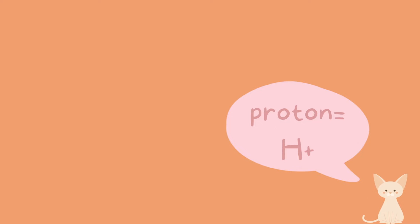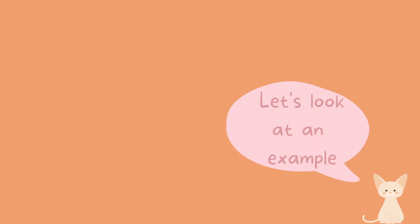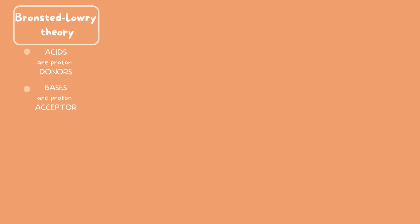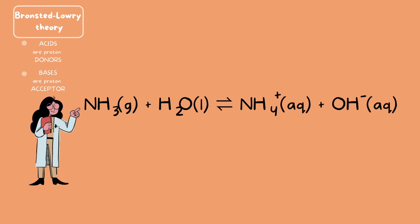This is because a hydrogen atom originally has one proton and one electron. So when it becomes an ion or a cation, it loses one electron and is only left with one proton. So in essence, a hydrogen ion is pretty much just a proton. Let's go ahead and look at some examples. Our first example is going to be on the Bronsted-Lowry theory.